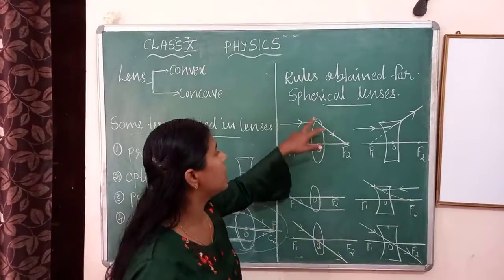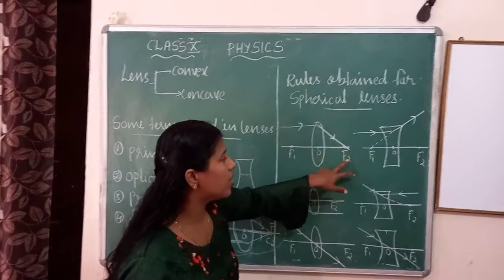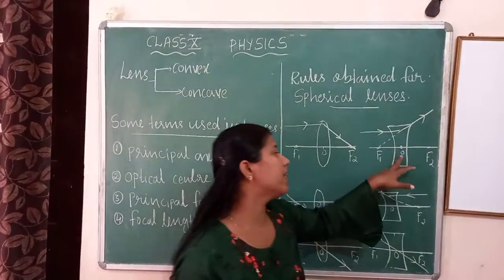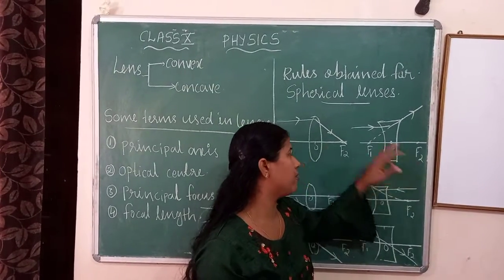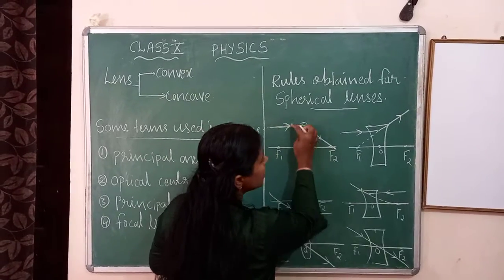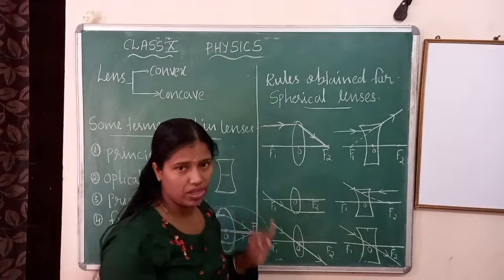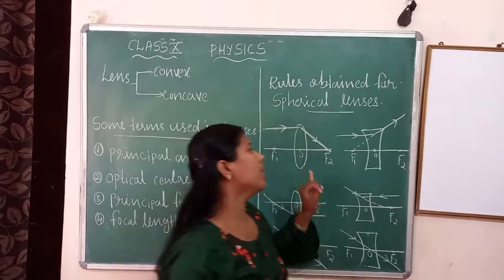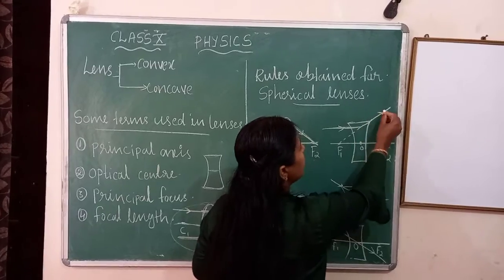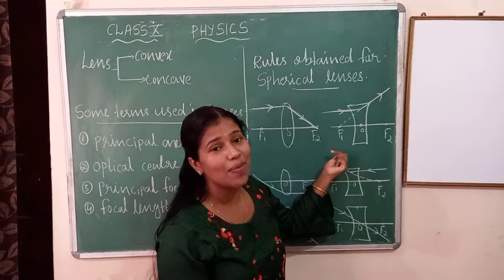How to draw the diagram? We use the optical center with F1 on one side and F2 on the other. A ray of light parallel to the principal axis, after refraction, passes through the focus — this is the first rule for a convex lens. For a concave lens, a ray parallel to the principal axis appears to come from the focus F1 after refraction.